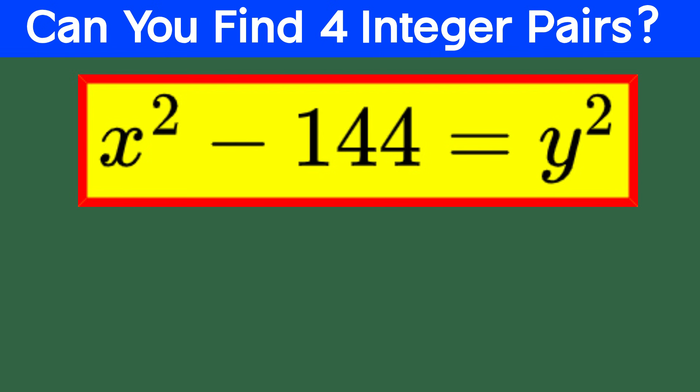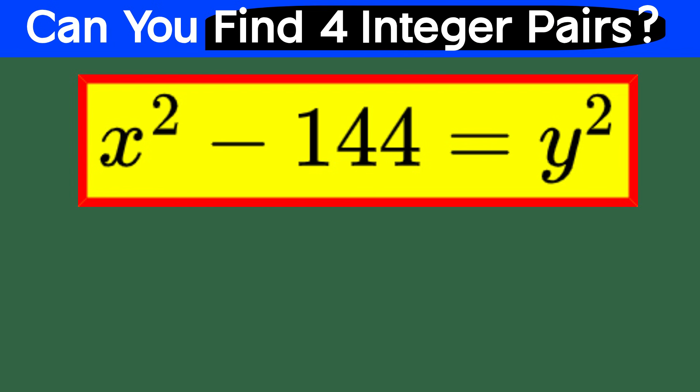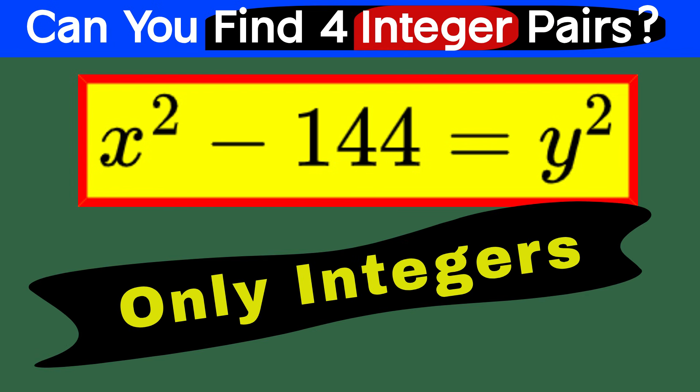All right, let's roll up our sleeves and tackle this algebraic riddle together. The equation we're working with is x squared minus 144 equal to y squared. Our task? To find four integer pairs, yes, integers, of x and y that satisfy this equation.